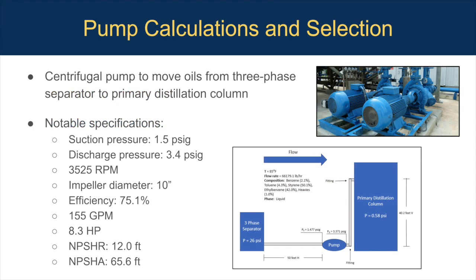We sized a centrifugal pump to move the oils from the three-phase separator to the primary distillation column. Centrifugal pumps are better suited for high flow rates than alternatives like diaphragm pumps. The pump was sized based on the amount of head that had to be overcome, including friction loss due to the pipe as well as changes in height. These distances were estimated to ensure all equipment would fit within the footprint. It's important to avoid cavitation, which meant NPSHA had to be greater than NPSHR. Specifications were then obtained from the pump curve, including rotations per minute, impeller diameter, and efficiency.